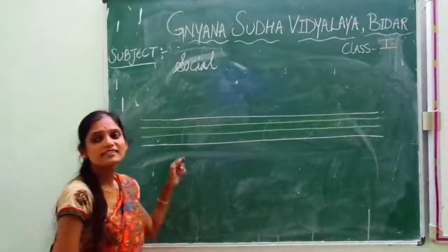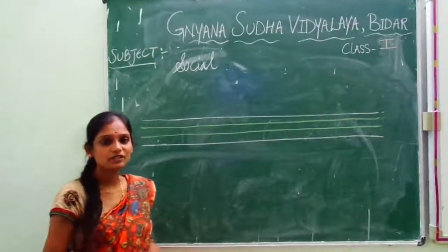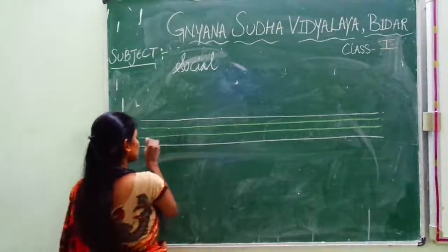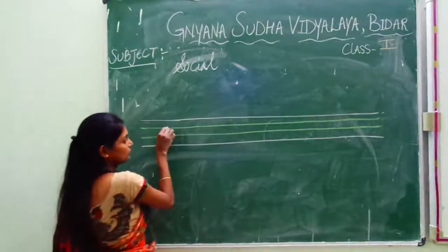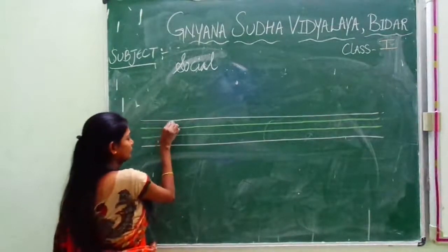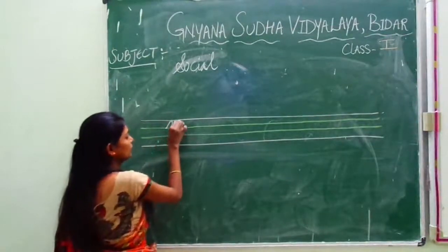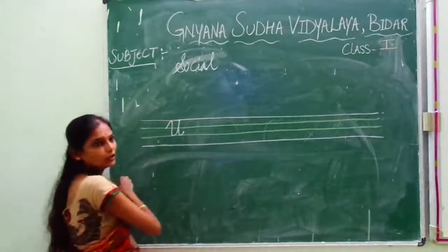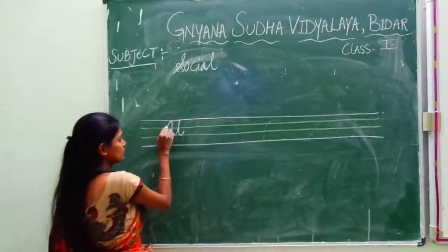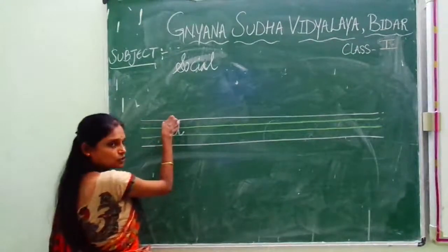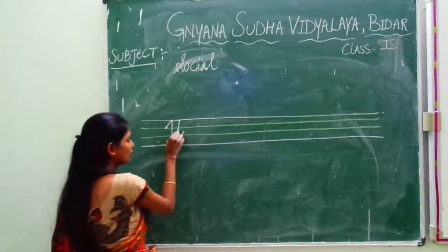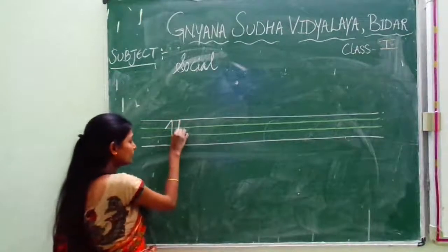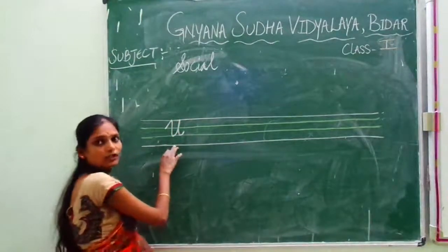Okay children, now we will start with capital cursive U. Let's see how I am writing capital U. Start with this line, then come down, again. This is called U. See here — touch this, go up, touch the pink line, then come down, again go up and touch the pink line, come down. This is called capital U.